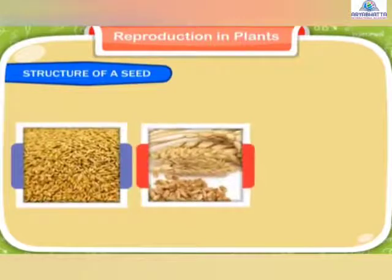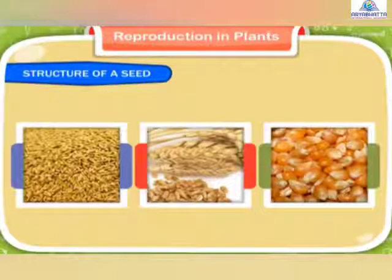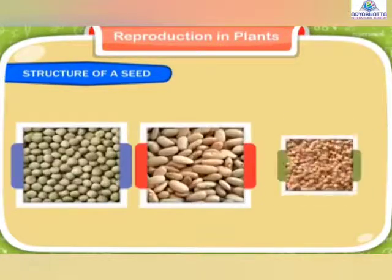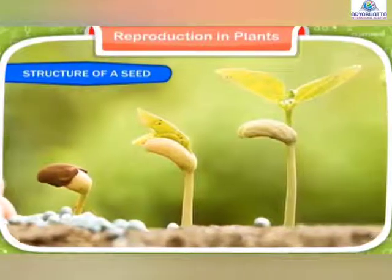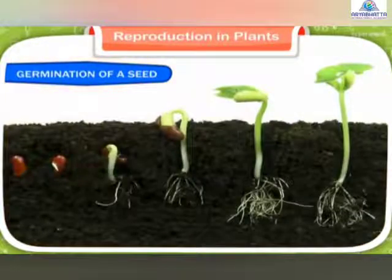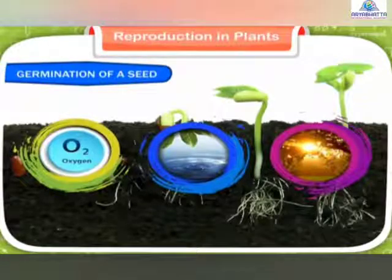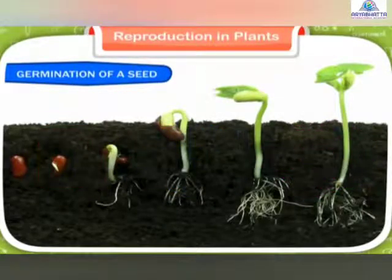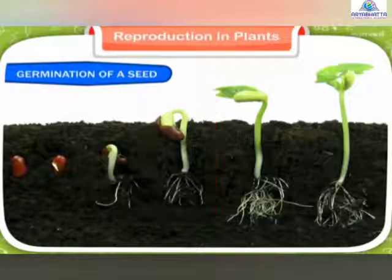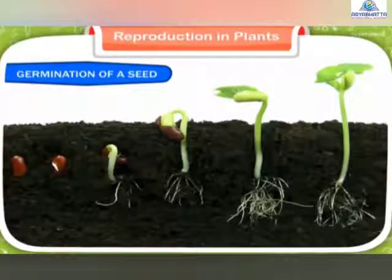Some seeds like rice, wheat, and maize have only one seed leaf, whereas seeds like peas, beans, and grams have two seed leaves. The baby plant remains inside the seed till it gets favorable conditions to grow. A seed needs oxygen, water, and warmth to grow into a new plant. When a seed is exposed to proper conditions, water and oxygen are taken in through the seed coat. The embryo's cells enlarge, the seed coat breaks open, and a root emerges first, followed by the shoot containing the leaves and the stem. This process of growth of the baby plant from the seed into a young seedling is termed germination.